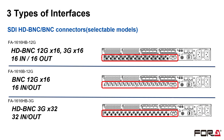There are three types of SDI interfaces for the FA1616. The FA1616H-B12G has 32 HD BNC connectors — 16-in, 16-out. Of these, 8-in and 8-out, shown in the shaded rows, support up to 12G.